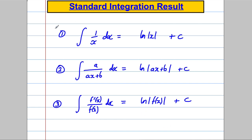We've talked about the first two results before in videos one and two on integration. But the third one is the most general case — it explains the two above. The top of the first result is the differential of x, hence it's ln of x. The top of the second is the differential of ax plus b, hence the integral is ln of ax plus b. The third is the most general case: any function of x on the denominator, if the numerator is the differential of that, then the integral of the whole expression is ln of f of x plus c.